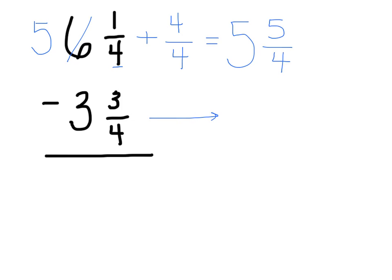Now I can just slide over this number and my subtraction sign. I've got 3 and 3 fourths and my subtraction will begin with the fraction. So now I can do 5 fourths minus 3 fourths, 2 fourths, and I can do 5 minus 3 which is 2.